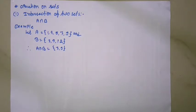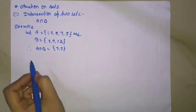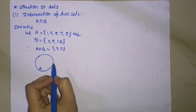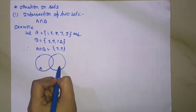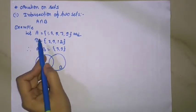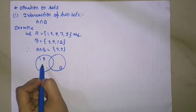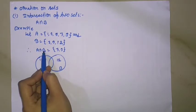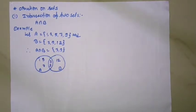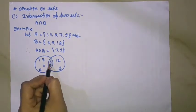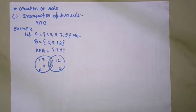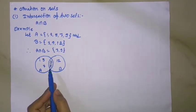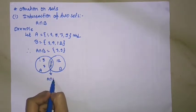We can represent this example in a Venn diagram. Set A and set B. Elements of set A are 1, 5, and 7; elements of set B include 12. A intersection B equal to {3, 9}. The overlapping part in the Venn diagram represents the intersection of set A and B.